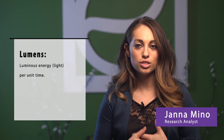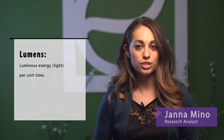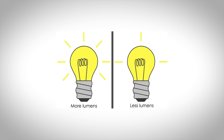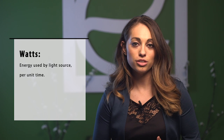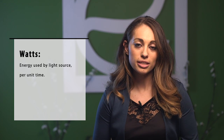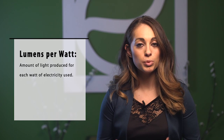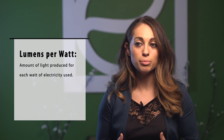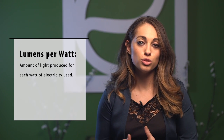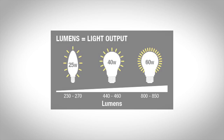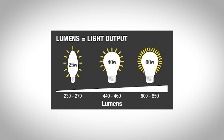Lumens is the luminous energy or light per unit time. Watts are the energy used by a light source per unit time. Lumens per watt is the light produced for each watt of electricity used — it's sort of like miles per gallon.